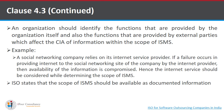An organization should identify the functions provided by itself and also those provided by external parties such as clients, suppliers, and vendors, which affect the confidentiality, integrity, and availability of information within the ISMS scope. For example, a social networking company like Facebook relies on its internet service provider for website availability. If a failure occurs in the internet service provider, the availability of information on Facebook's website is compromised. Hence, the internet service should also be considered when determining the scope of ISMS. ISO states that the scope of ISMS should be available as documented information.